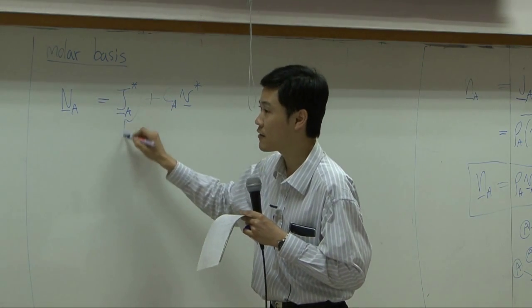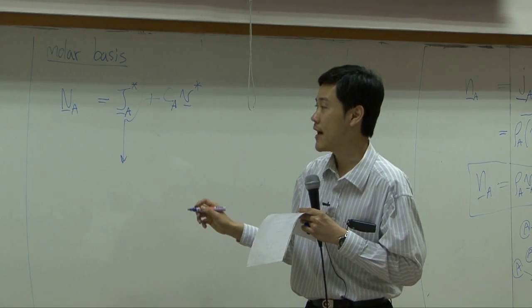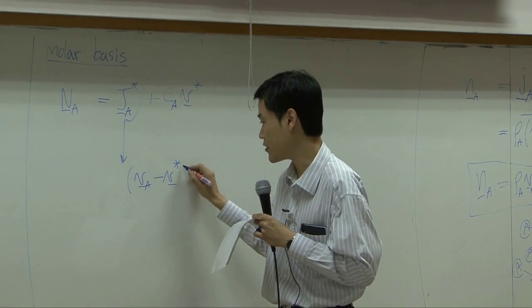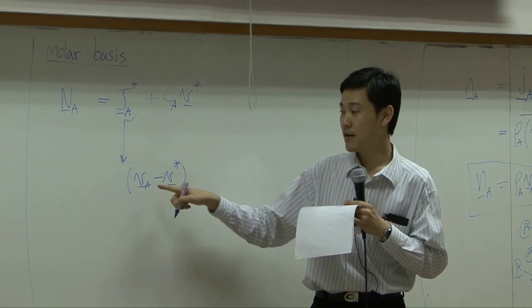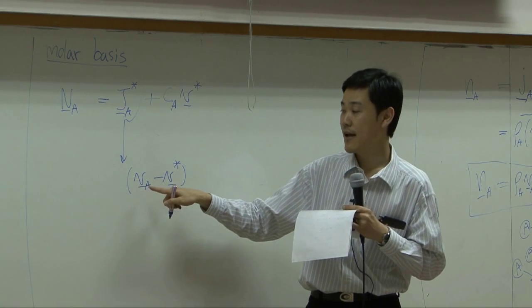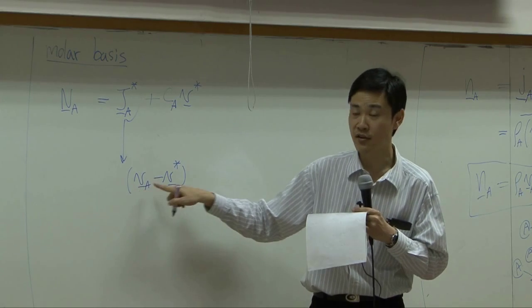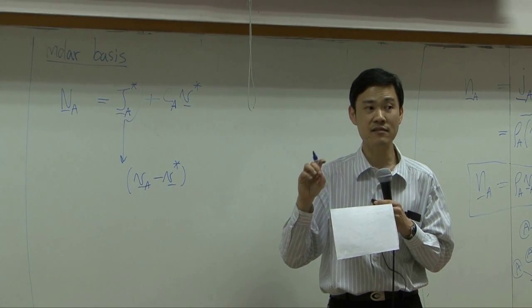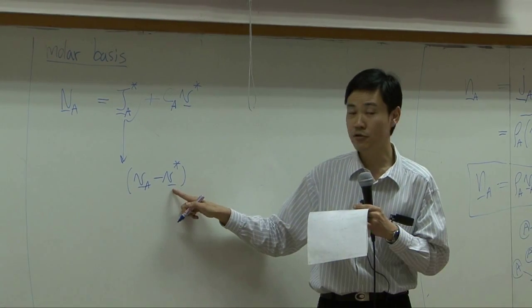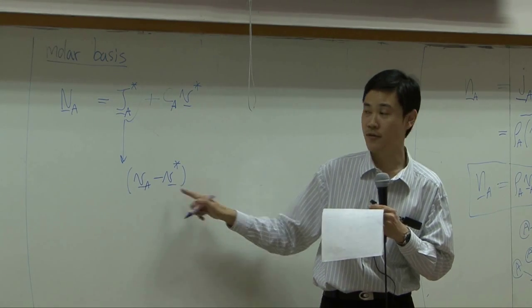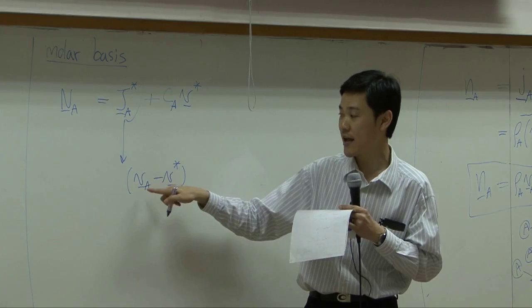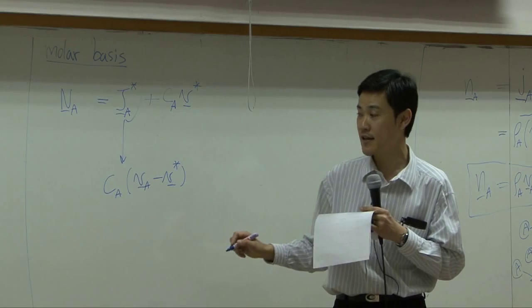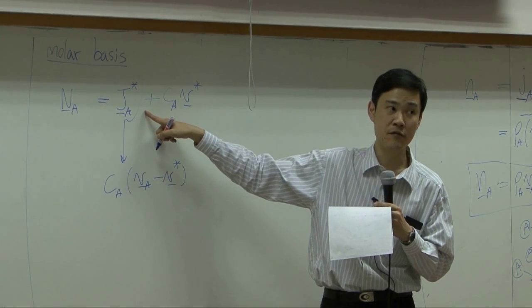So JA star, if you look into theory, and you count how much A moves faster than the average. Remember, if you look into velocity of A, and see how much it moves faster than the average. But in this case, instead of using mass calculated average, we will use molar average instead. This term will tell you how much A moves faster than the average velocity. You multiply by concentration of A, in this case in mole, you get flux, diffusion flux.